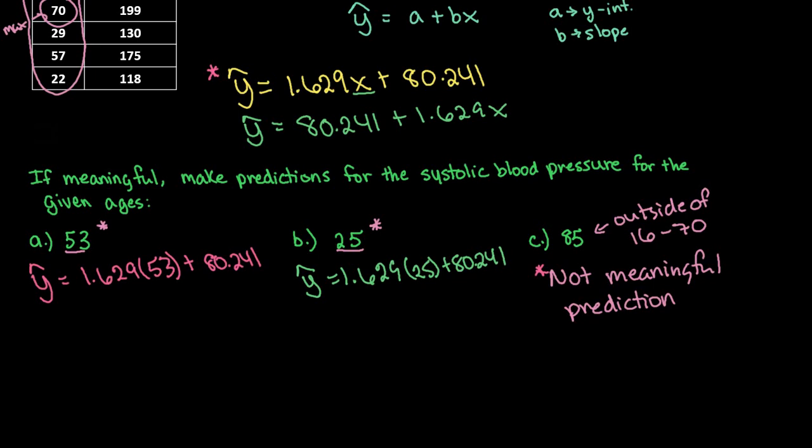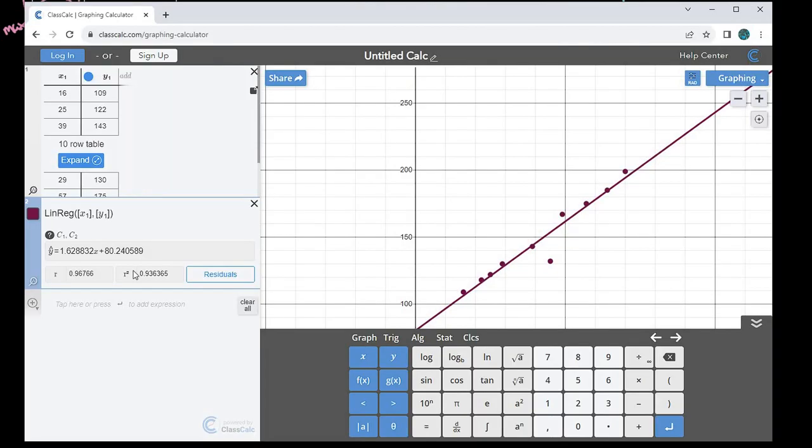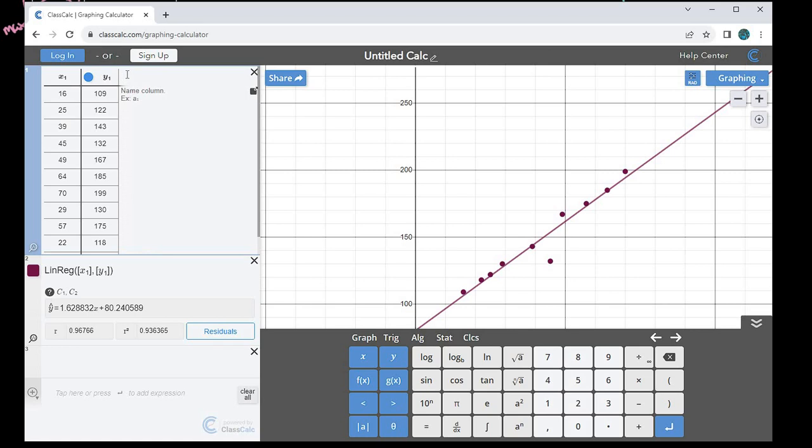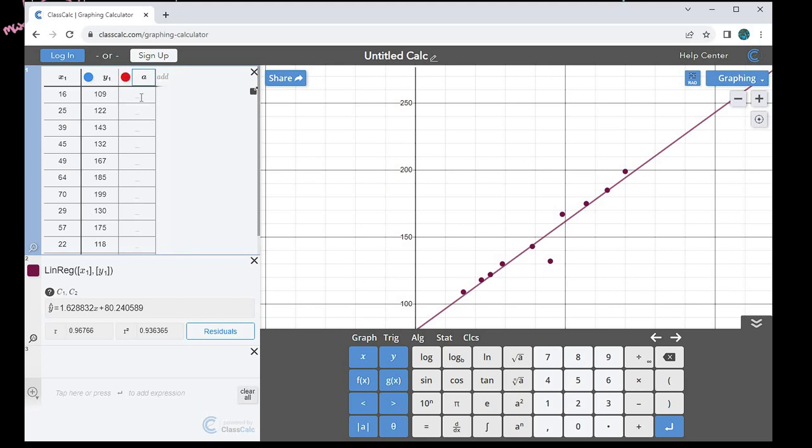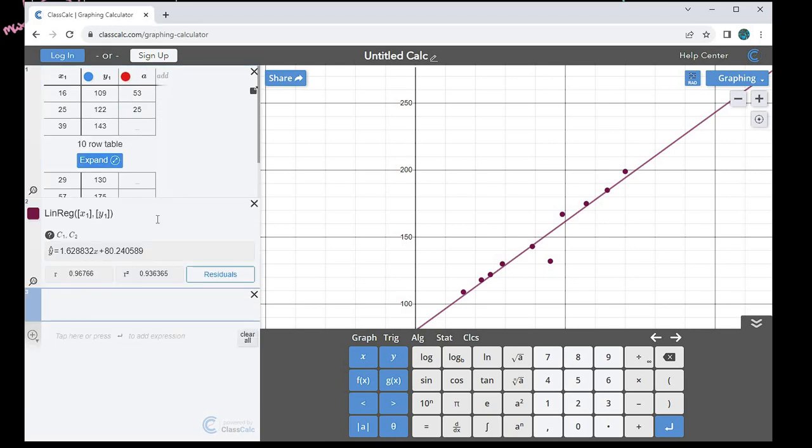Using ClassCalc, instead of going through and typing them in individually, what I can do is add onto this. I'm going to add another column, and I'll call it A. I know that I want to make predictions for 53 and I want to make predictions for 25. So what I can do is, because I use the variable A, I can type in 1.629 times A plus 80.241. And right now it gives me a two-item list.